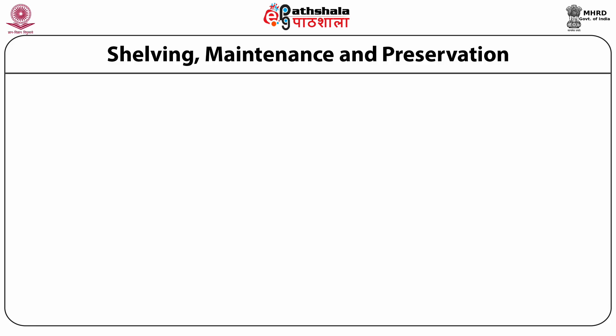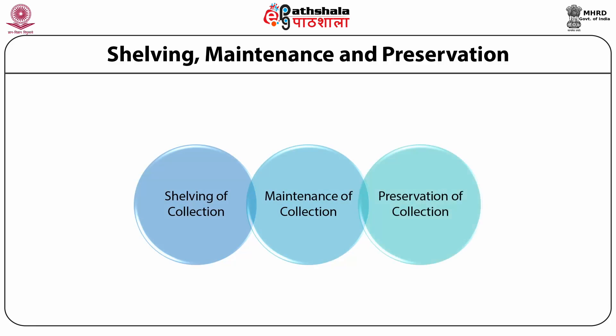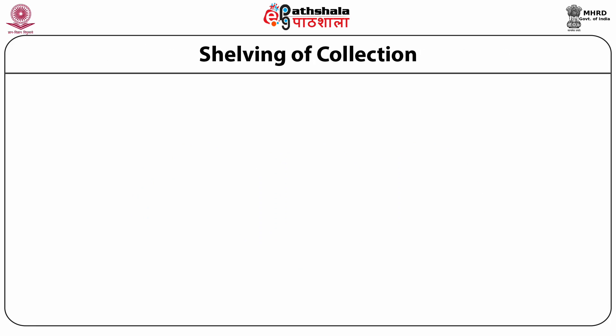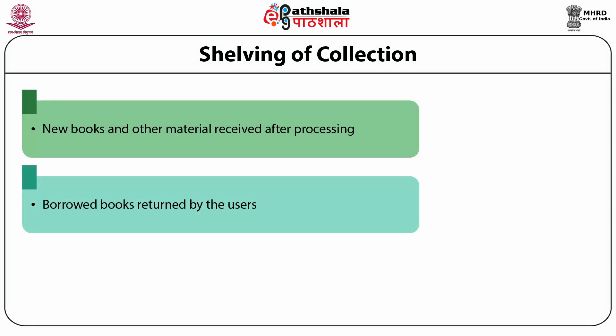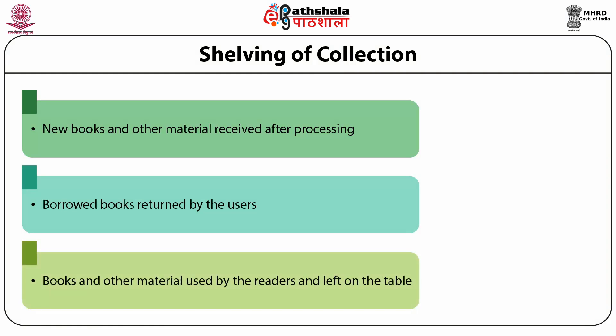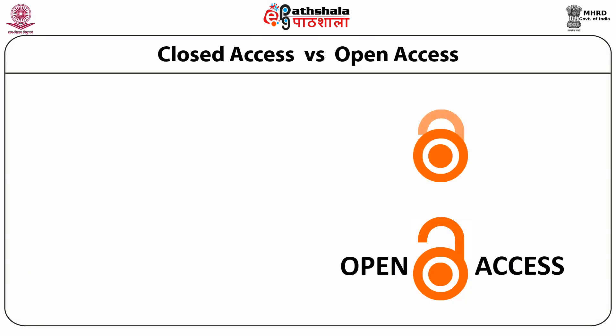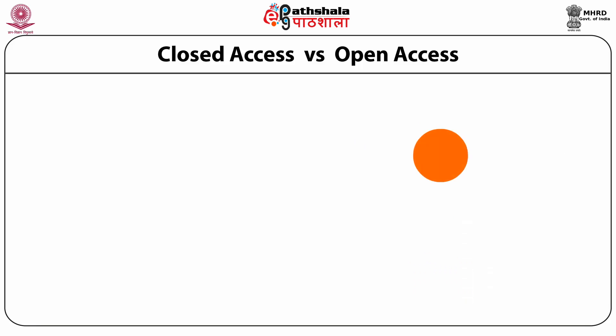The maintenance department is responsible for shelving of collection, maintenance of collection and preservation of collection. Arranging books and other material on the library shelves is known as shelving. The work involves sorting, shelving, reshelving, shifting, shelf reading, dusting and cleaning the stacks and the collection. The shelved collection is kept under closed access system or open access system.